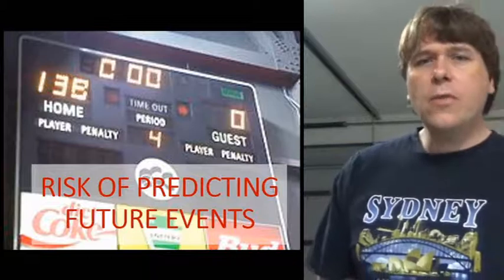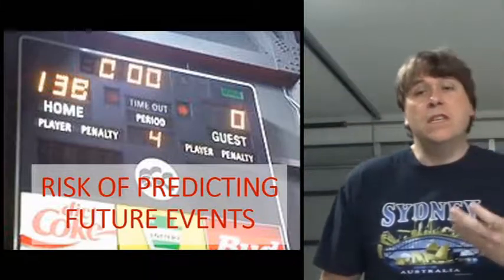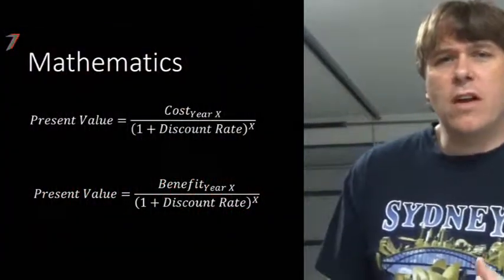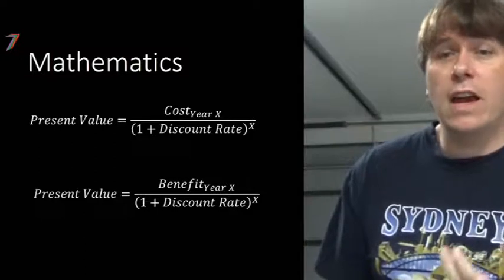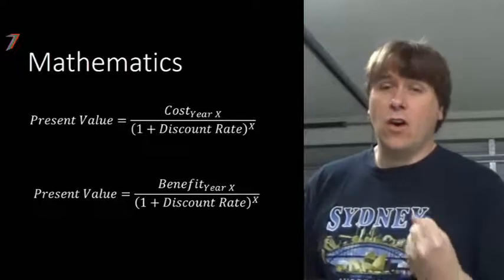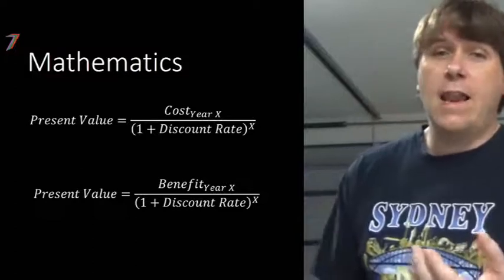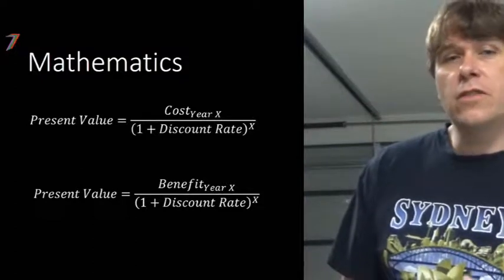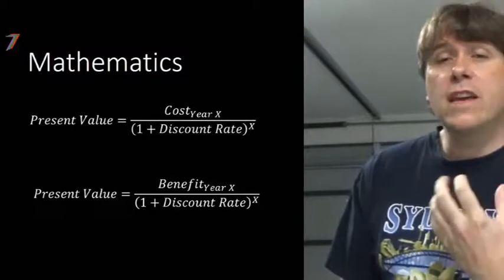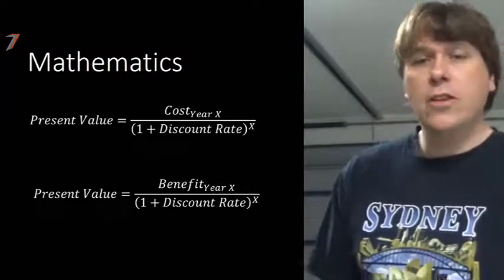Normally you would be given a discount rate from whatever authority you're submitting funding to. The discount rate is used to calculate present value. For example, if you have a cost in year 10, you divide that cost by (1 + the discount rate) to the power of 10, and that gives you the present value of that cost for that year.